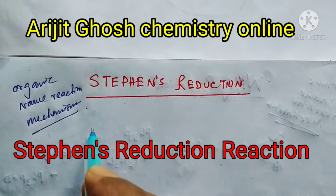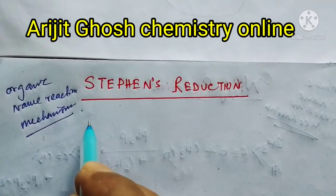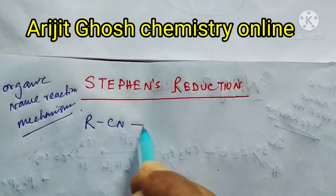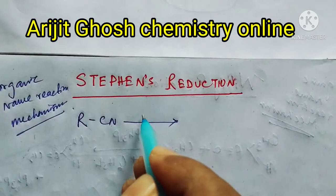What is Stephen's Reduction Reaction? Actually, in this case, alkyl cyanides in presence of stannous chloride